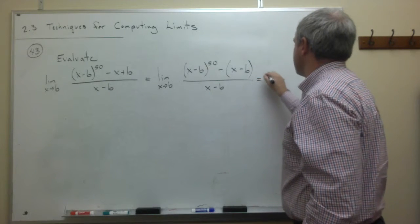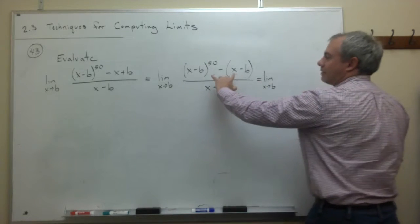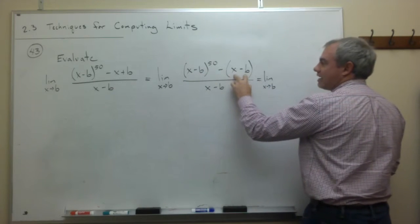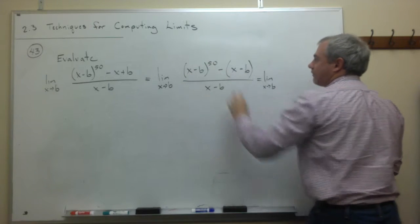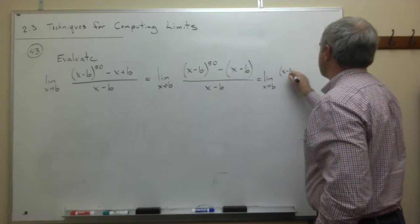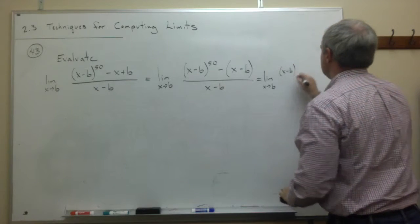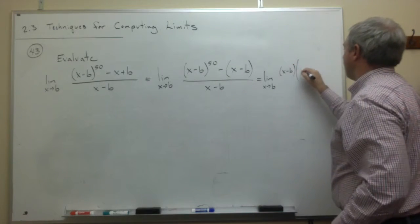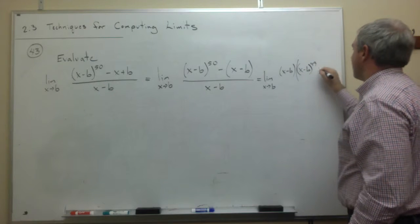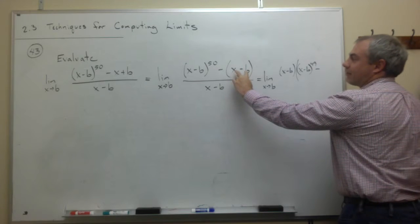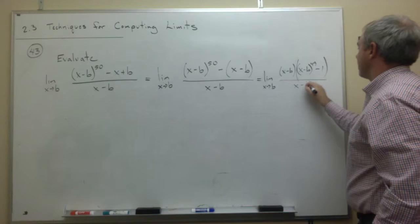So I'm going to say this is equal to the limit as x goes to b of, I'm going to factor an x minus b out of each of these. I'll factor out an x minus b from x minus b to the 50th, which will give me an x minus b times x minus b to the 49th, minus, factor out an x minus b from x minus b, I just get 1 divided by x minus b.